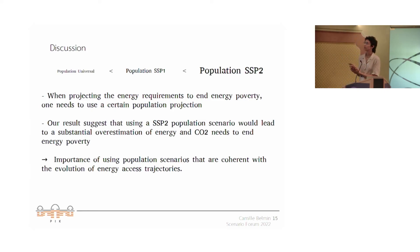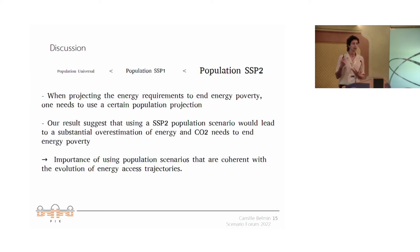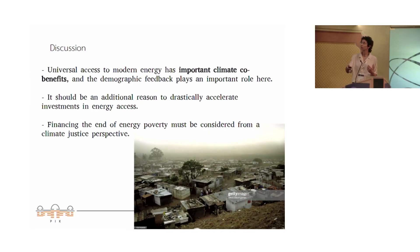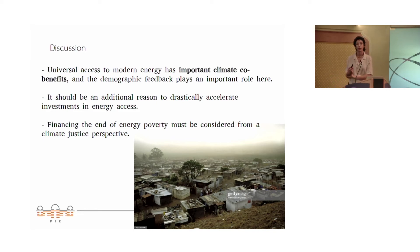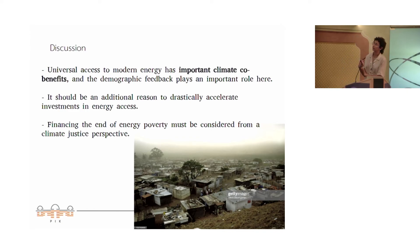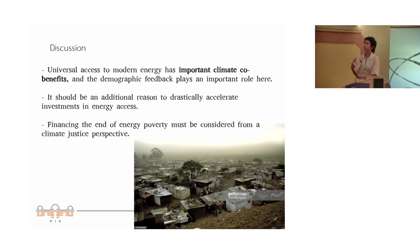The demographic feedback contributed to reducing this energy demand by about 8 percent in SSP1 and 40 percent in SSP2. When projecting how much energy is needed to end energy poverty, you need to use a consistent population scenario — using SSP2 would lead to a substantial overestimation of energy demand and CO2 needed to address energy poverty. Our results suggest that universal access to modern energy has important climate co-benefits and the demographic feedback plays an important role. This should be an additional reason to drastically increase and accelerate investments in energy access, and financing energy poverty could also be seen as a contribution to climate justice.